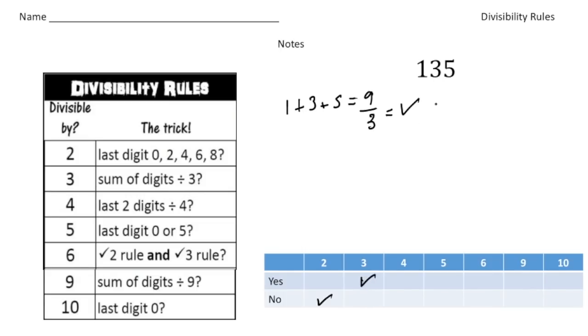The rule for 4. Look at the last 2 digits. And 4 cannot go into 35 evenly, so that's a no. 5, well, it has to end in a 0 or a 5, right? So this one ends in a 5, so that's a yes. Now the rule for 6, remember, is that both 2 and 3 are factors. And notice, 2 is not a factor. So that automatically means that 6 is not a factor.